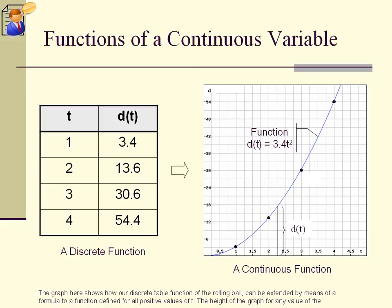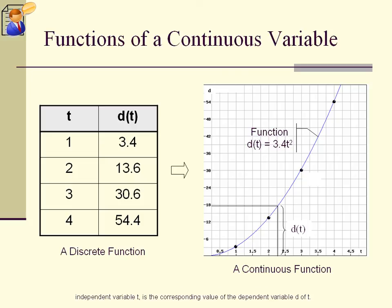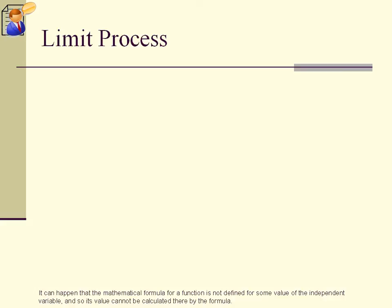The graph here shows how our discrete table function of the rolling ball can be extended by means of a formula to a function defined for all positive values of t. The height of the graph for any value of the independent variable t is the corresponding value of the dependent variable d of t.